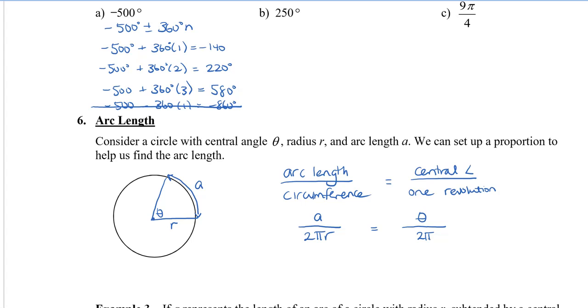So let's do some simplification. I'm going to multiply both sides by 2π R so that I can get rid of my fraction here. So I end up with A is equal to θ times R. And this is a little formula that you can use to find the arc length.